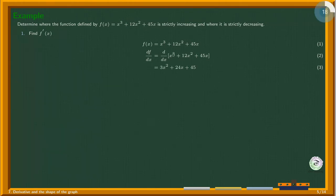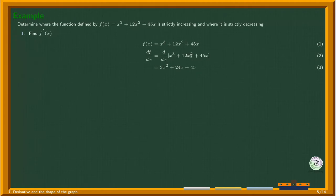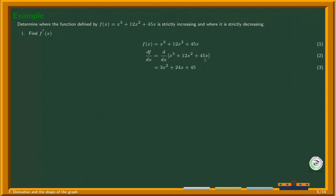Differentiating x³ using the power rule: bring down the 3 and subtract 1 from the exponent to get 3x². For 12x², pull the 12 out, bring down the 2, giving 24x. For 45x, the derivative of x is 1, so we get 45. Therefore f'(x) = 3x² + 24x + 45. The second step is to set the derivative equal to zero.